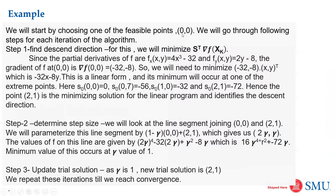We start with (0,0) as initialization. Then we try to minimize — our objective function is this polynomial, and we try to get the descent direction. We minimize the partial derivative to get the descent direction. Putting all boundary points into the partial derivative, keeping y constant we get x terms, and keeping x constant we get y terms. Substituting our initial value we get minus 32, 8. We then multiply using that product and get the new partial derivative function.